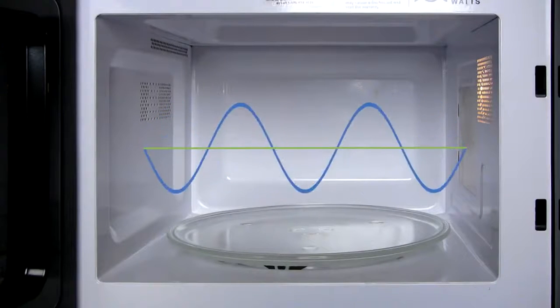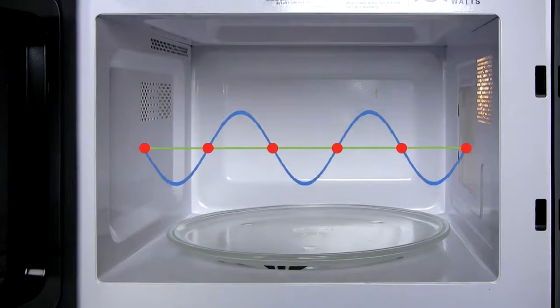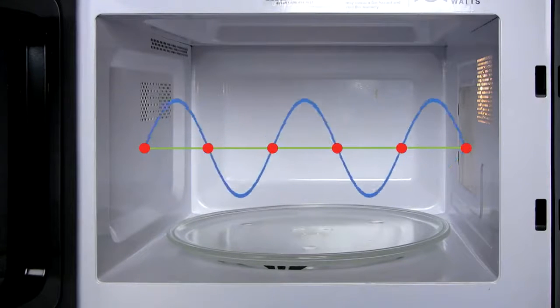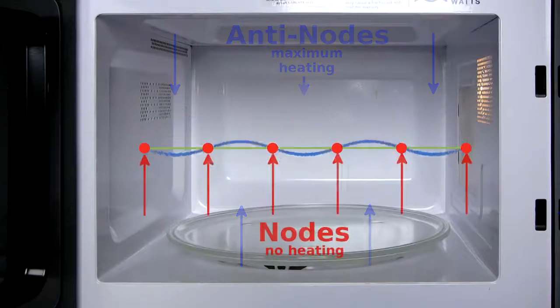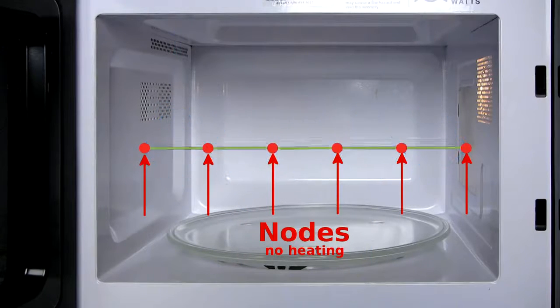The three-dimensional pattern of waves is difficult to predict, but the principle can be seen by looking at the waves in a single dimension. The peaks and valleys in the wave represent the greatest energy of the wave. The nodes here correspond to the cold spots inside the chamber.